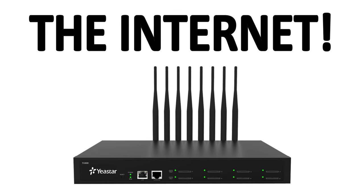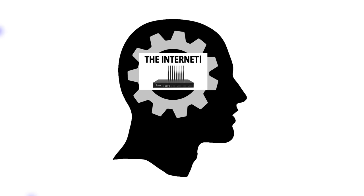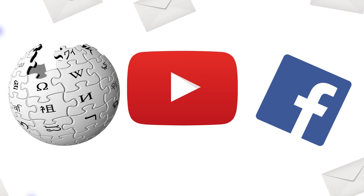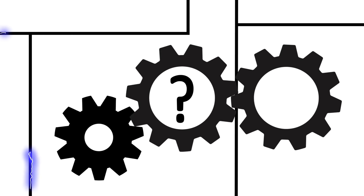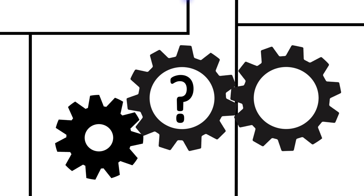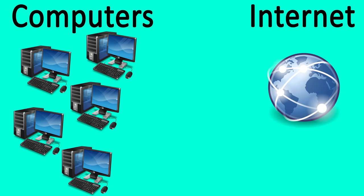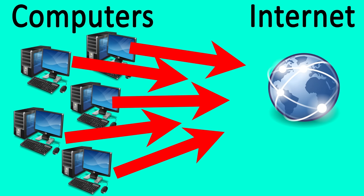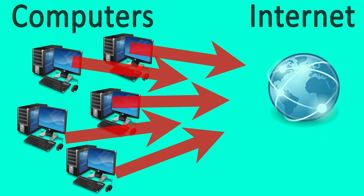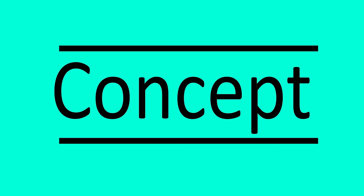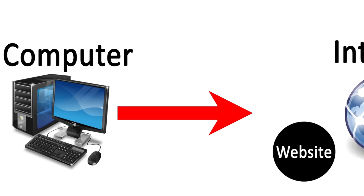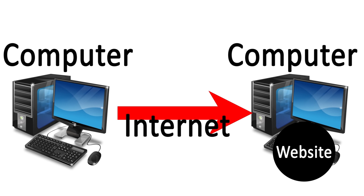If you're watching this video, it's safe to assume that you know what the internet is to at least some degree. A common problem many people have is thinking of the internet as if it's this one thing that all of our computers connect to. In reality, the internet is just a bunch of computers sending and receiving data from each other using phone lines — the internet itself is really more of a concept than an actual thing. A website, YouTube video, or Facebook page doesn't exist on the internet — it exists on a computer somewhere in the world that is being accessed through the internet.